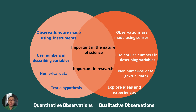So what's the difference between quantitative and qualitative observations? Using a Venn diagram: quantitative observations are made using instruments, use numbers in describing variables, and allow us to test a hypothesis. Qualitative observations are made using senses, do not use numbers, involve non-numerical or textual data, and allow us to explore more ideas and experiences. As for their similarities, both are important in the nature of science and in research.